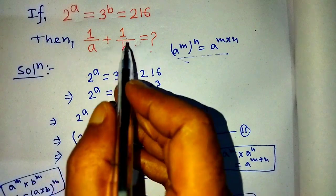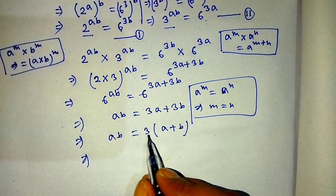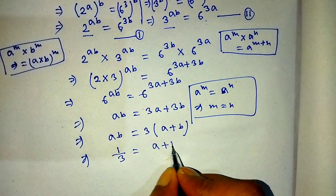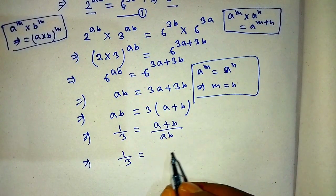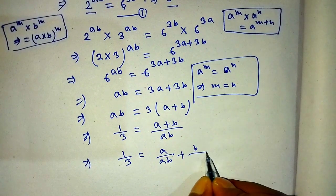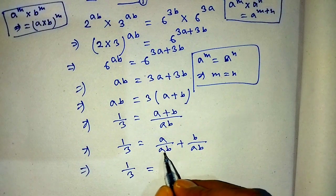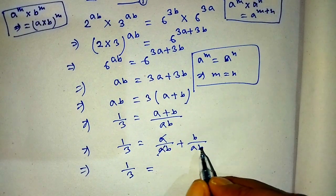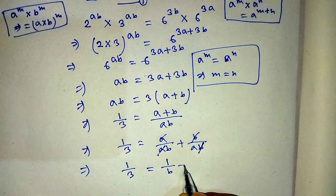To find the value of this algebraic expression, we transpose AB from left side to right side and the 3 from right side to left side, giving us 1 over 3 is equal to (A plus B) over AB. We can split the right side as A over AB plus B over AB, which simplifies by cancelling A and B respectively, to give 1 over B plus 1 over A.